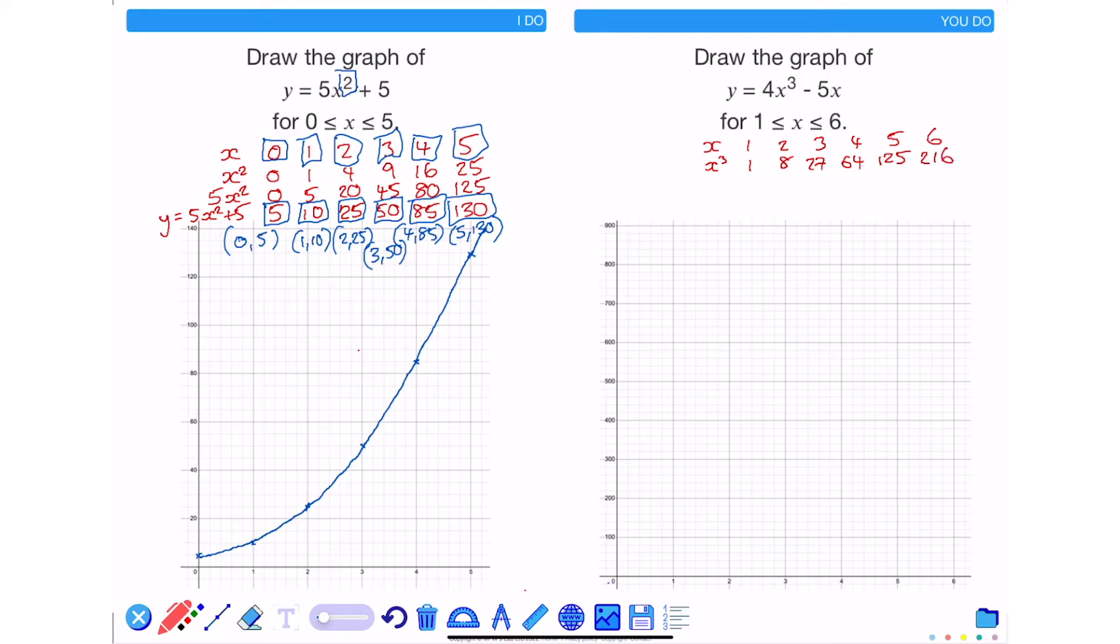Now multiply all of these values by 4, that will give me 4x cubed being 4, 32, 108, 256, 500 and 864.